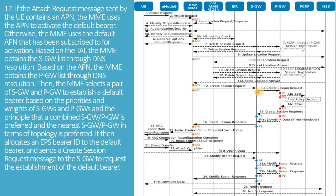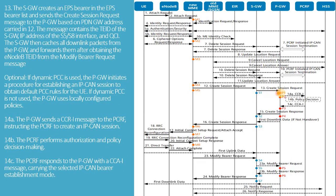The MME allocates an EPS bearer ID to the default bearer and sends a CREATE SESSION REQUEST message to the SGW to request establishment of the default bearer. The SGW creates an EPS bearer in the EPS bearer list and sends the CREATE SESSION REQUEST message to the PGW, based on the PDN GW address carried in the prior step. The message contains the TEID of the SGW, the IP address of the S5/S8 interface, and QCI. The SGW then caches all downlink packets from the PGW and forwards them after obtaining the E-NodeB TEID from the modify bearer request message.